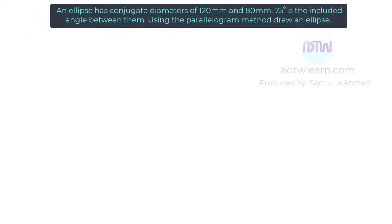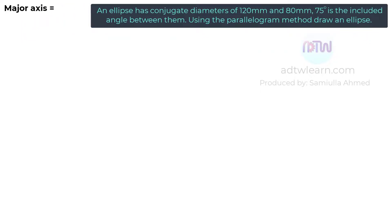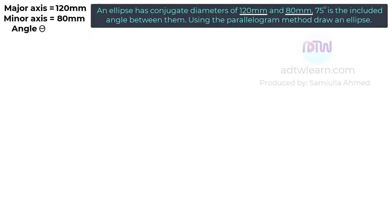In this question, the major axis of an ellipse is given as 120 millimeters and the minor axis is given as 80 millimeters. The included angle between these axes is given as 75 degrees.